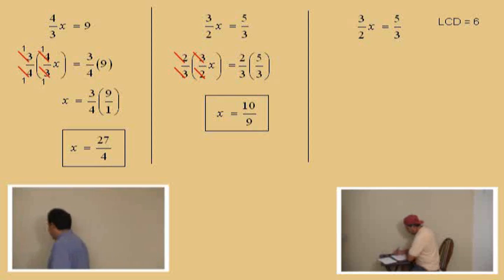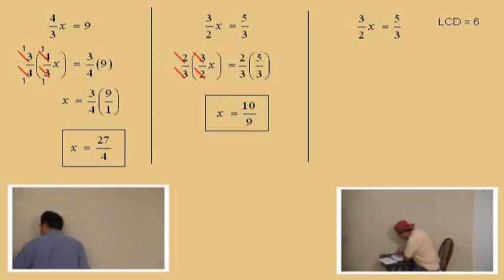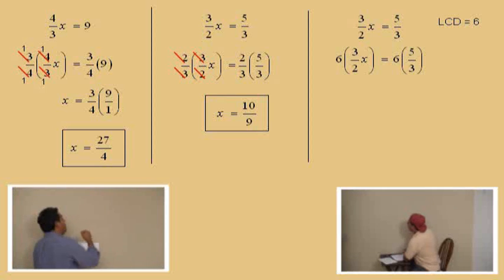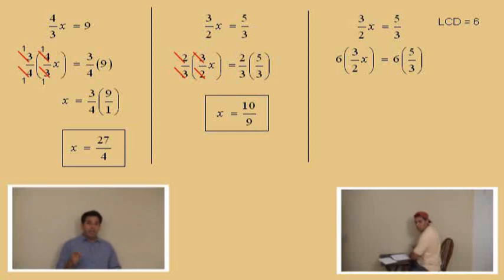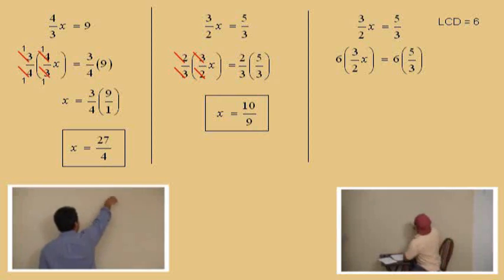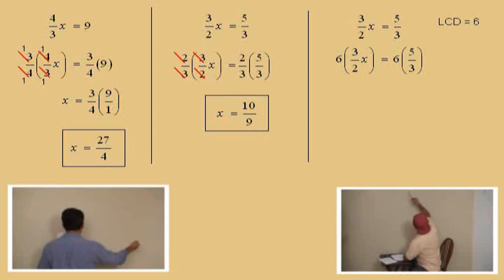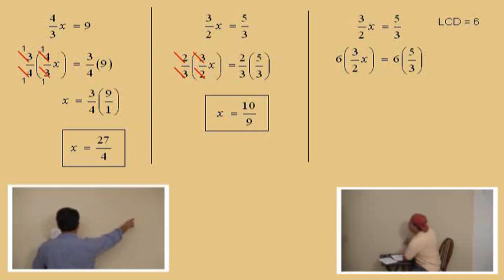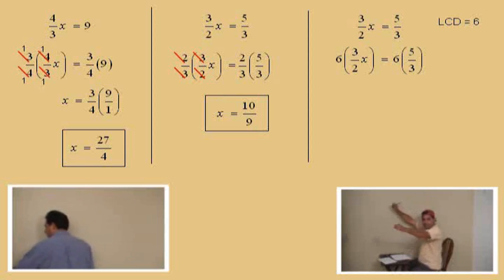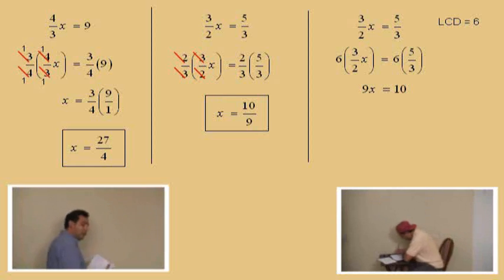We multiply both sides by six: six times three halves on the left, six times five thirds on the right. On the left side, two goes into six three times, and three times three is nine — so we get nine x. On the right side, three goes into six two times, and two times five is ten. So we end up with nine x equals ten — the fractions are gone, cleared out by kung fu.